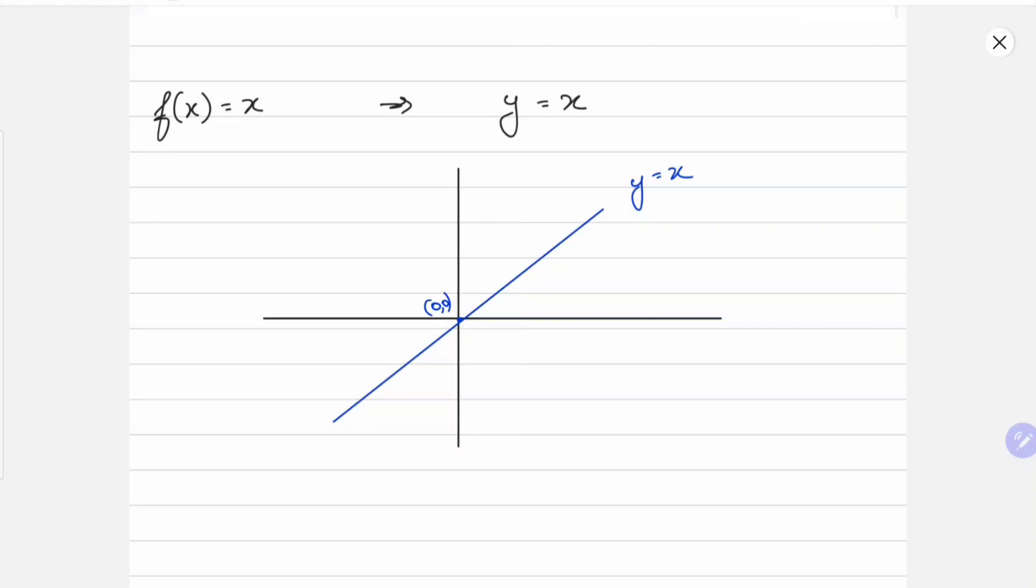Now we have to find the area from minus 1 to 1. So basically we have to find out this area, and this area is pretty simple. We don't even need to integrate the function. We can directly find out the area of the triangle and then double it.